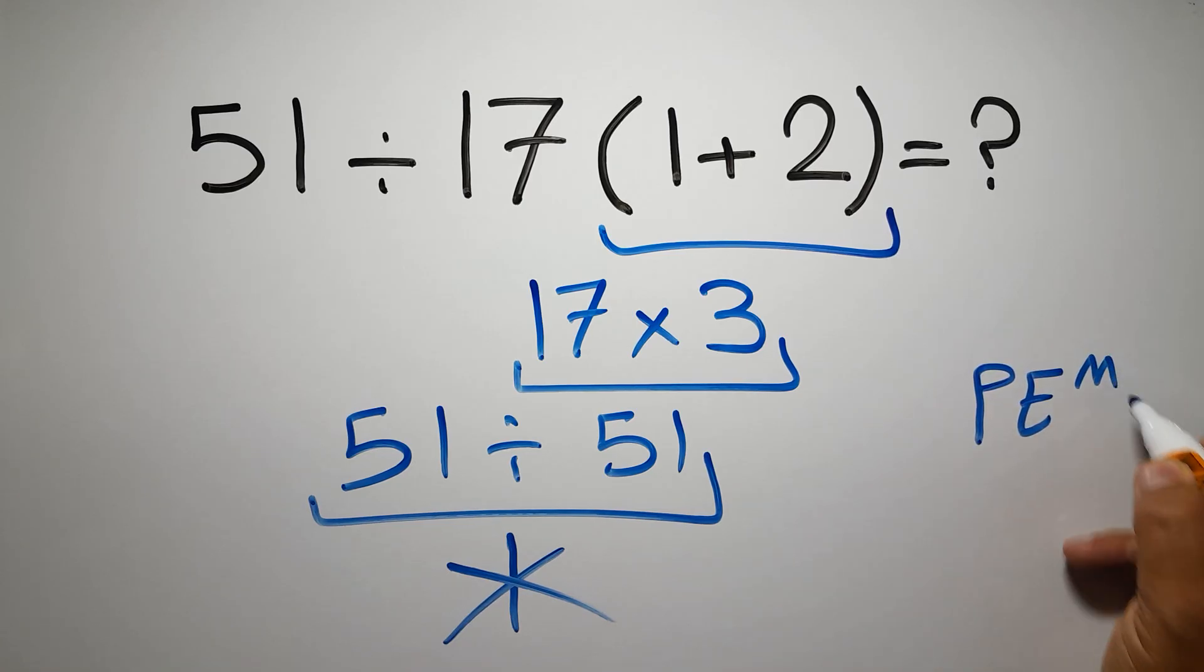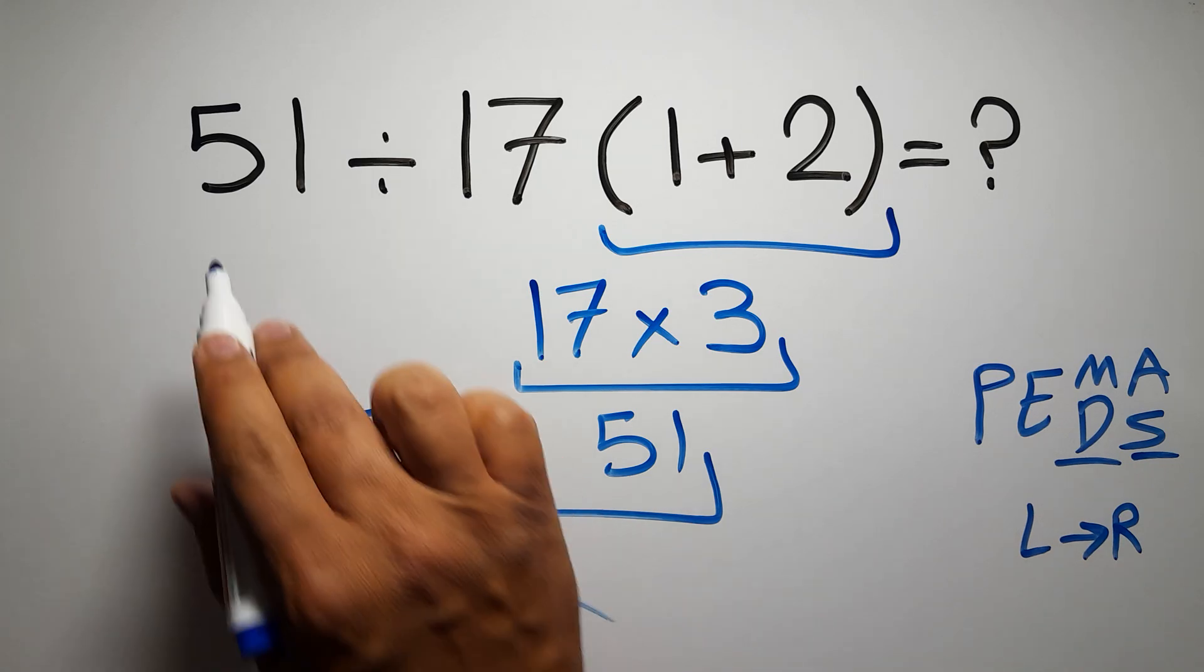Then exponents, then multiplication or division, and finally addition or subtraction. Remember that multiplication and division have equal priority and we have to work from left to right. The same applies to addition and subtraction.